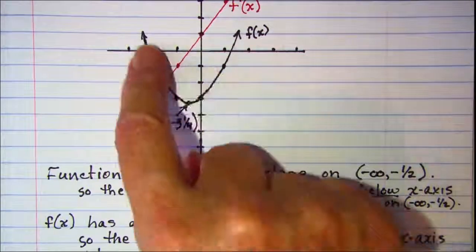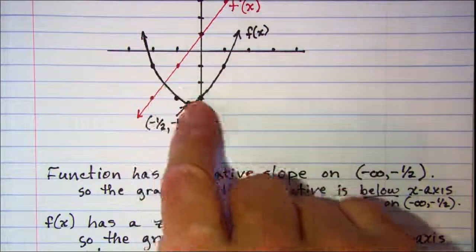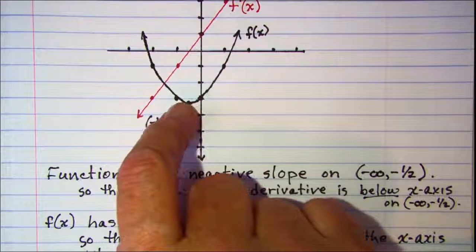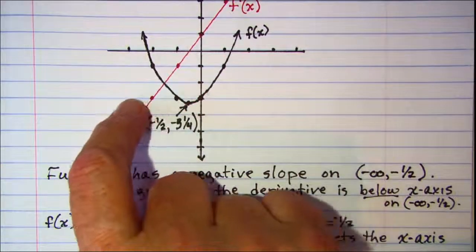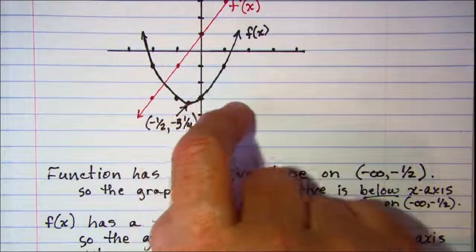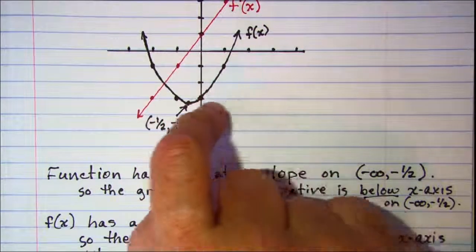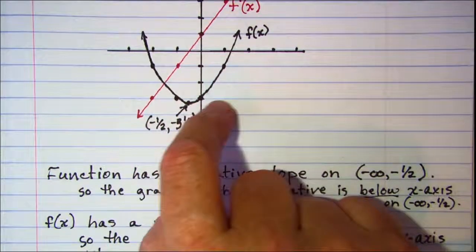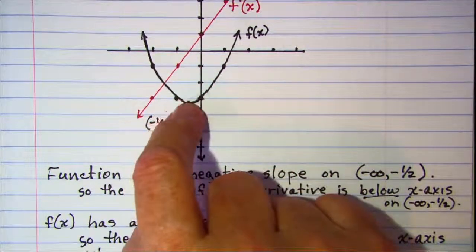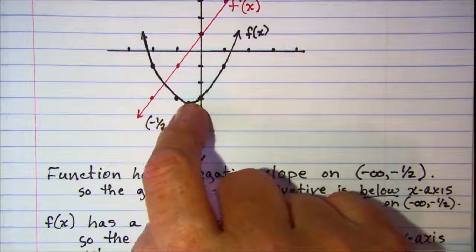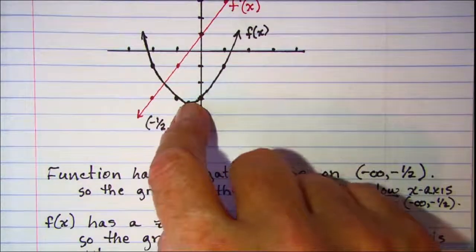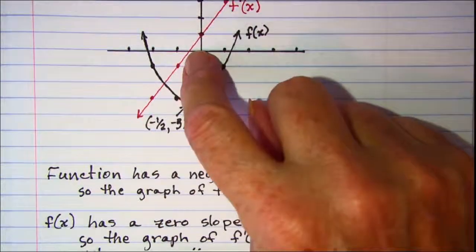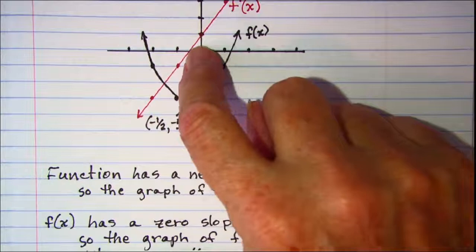Then when my function has a zero slope — at the vertex, the turning point — my tangent line is horizontal and the slope of a horizontal line is zero. So at that vertex, at x equals negative one half, my derivative crosses the x-axis. The value of my derivative is zero at that point.